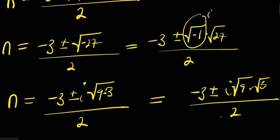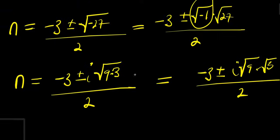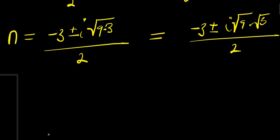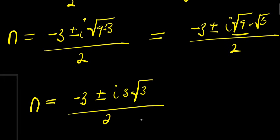So right now, you have n = (-3 ± i√9)/2, that is 3, 3√3 divided by 2.